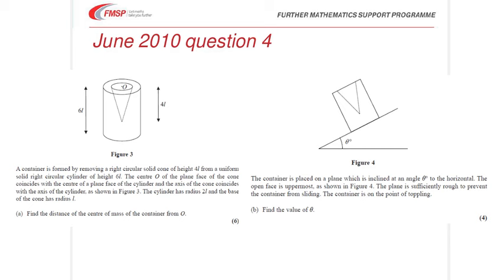And the first part of the question wants us to find the distance of the centre of mass of the whole thing, the cylinder with the cone removed from O, from the centre of the top plane face. So as usual with problems like this, we need to create a table of masses and distances.